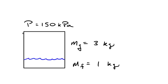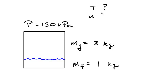In this problem, we've got a container with water and its vapor in thermal equilibrium. The pressure is 150 kilopascal, the mass of liquid water is one kilogram, and the mass of vapor is three kilograms. We want to figure out: the temperature, the specific internal energy in kilojoules per kilogram, and the actual volume of the system.